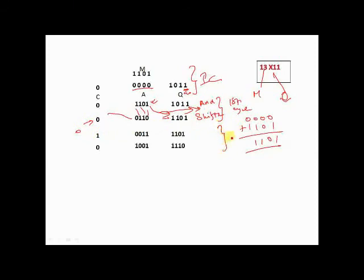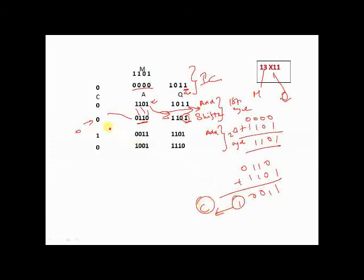In the second cycle, we have to decide whether to add or no add. Since q0 is 1, we add A plus M. The value of A is now 0110 and the value of M is 1101. When we add them, a carry is generated — that is why the carry flag becomes 1 — and the content of A becomes 0011. After that, we shift right: the content of Q becomes 0111 and the content of A becomes 1001.